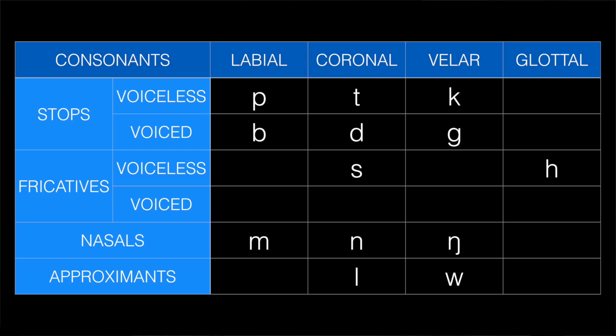A lot of times if you're working on a naturalistic conlang — one that's evolved from a proto-language — you get an idea that you want to introduce a new phoneme set. So say that you had some sort of a simple phoneme inventory: your three basic voiceless stops, your three basic voiced stops, maybe an S, maybe an H, and probably some other stuff. We're going to focus on the stops right now.